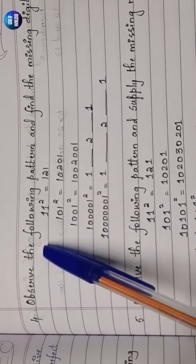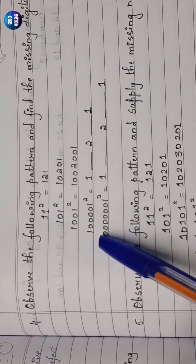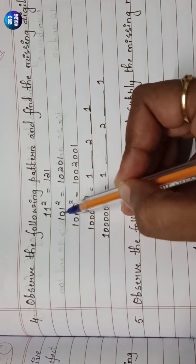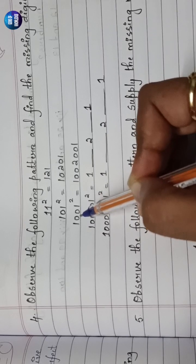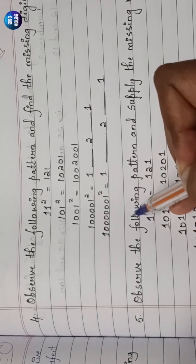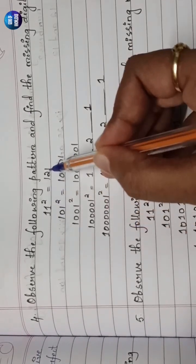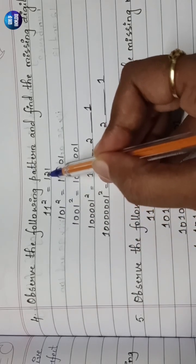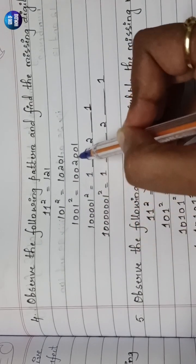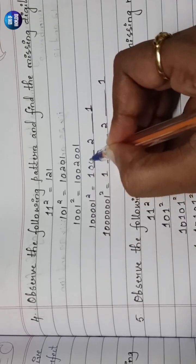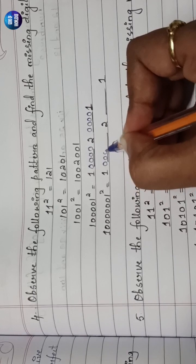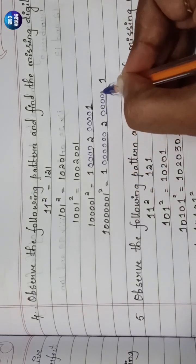Question 4: Observe the following pattern and find the missing digits. The pattern involves squaring 11, 101, 1001, etc. Here 11²=121, 101²=10201, and the pattern continues by adding zeros between the digits. With one zero inserted you get 10201; with two zeros you get 1002001; with four zeros even more zeros appear in the result. The number of zeros in the square matches the number of zeros in the original number.